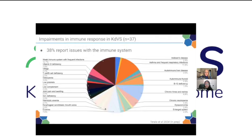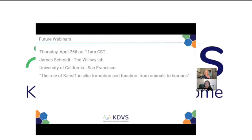The next webinar will be Thursday, April 25th at 11 a.m. Central time. James Schmidt, a graduate student in Helen Wilsey's lab at UC San Francisco, will present translational work on the role of KAT6A in cilia formation and function, using both animal models and human data.